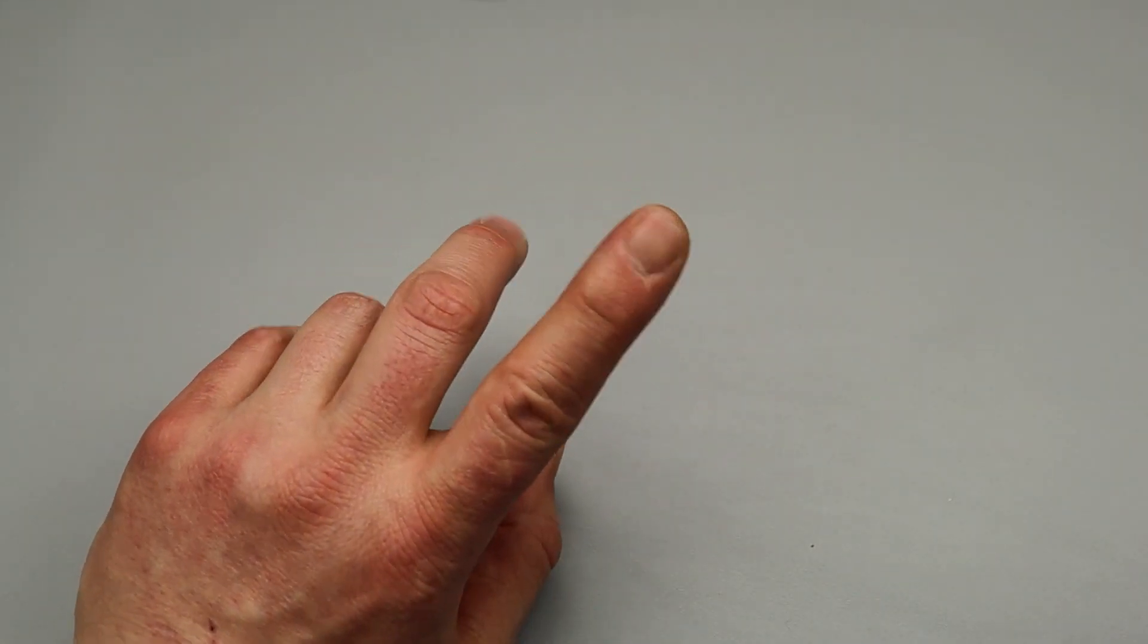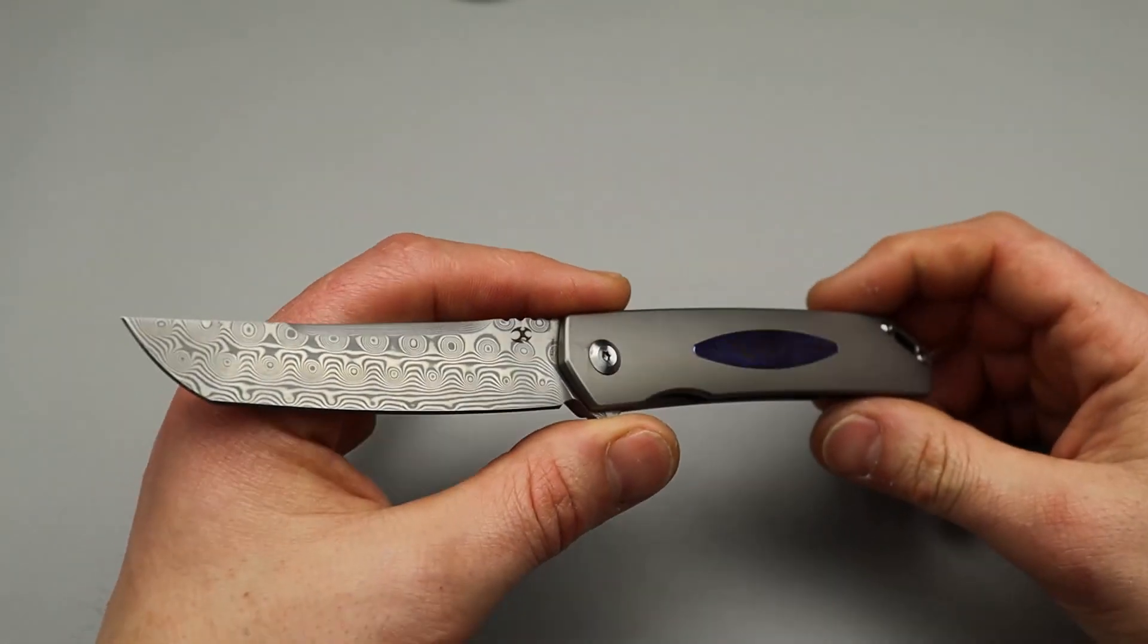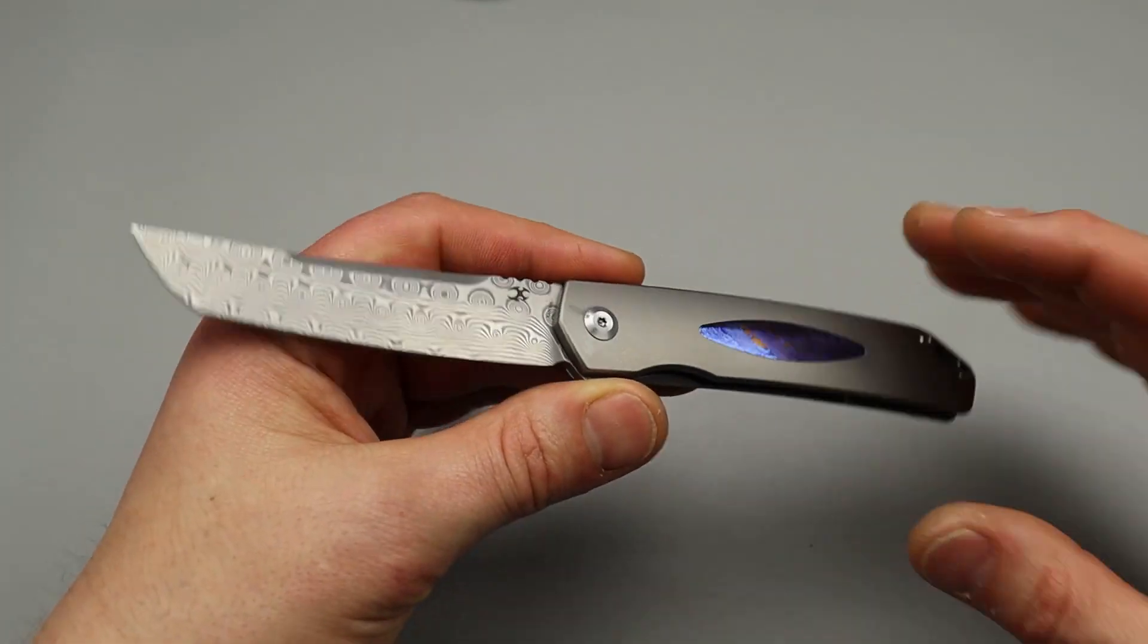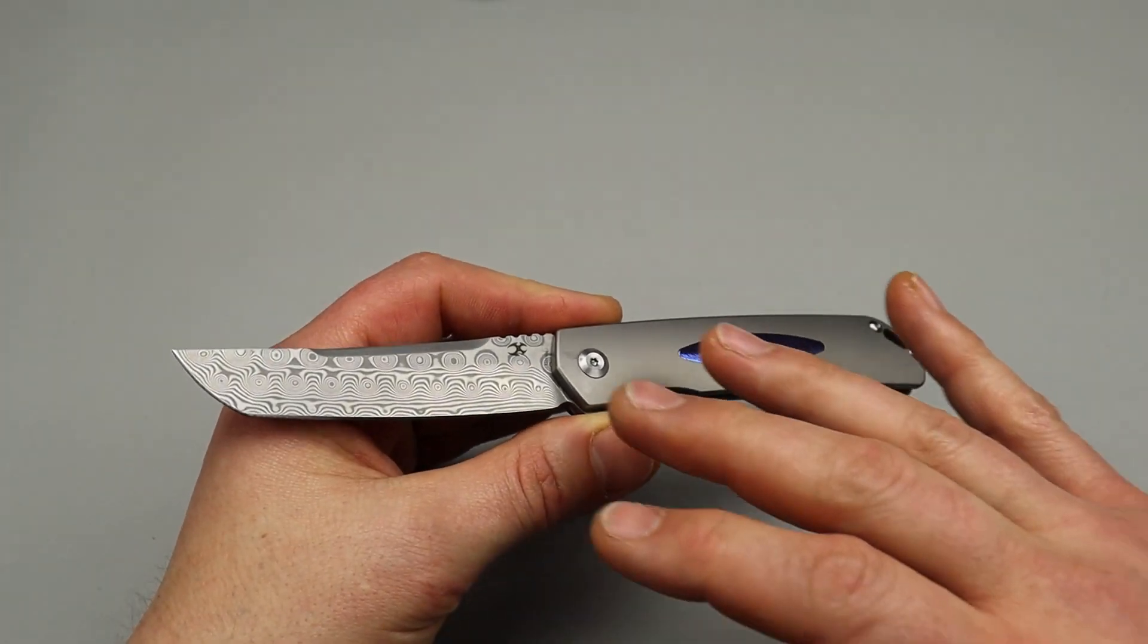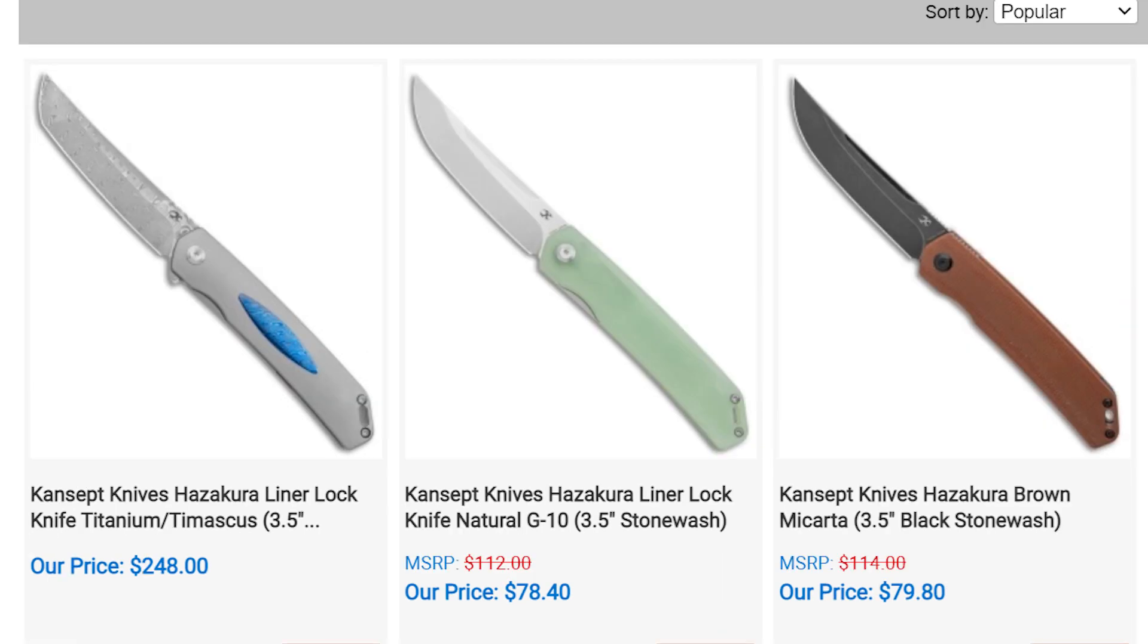Now, let's get to some of the options. First, the Concept Hazakura. Now, this one comes in multiple different options. This is the most premium option, but they do have a carbon fiber option. They have a budget option. Lots of options with the Hazakura.